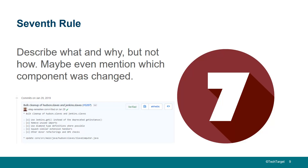Describe what and why, but not how. If somebody wants to know how, they can go look into the code. Describing what was changed, maybe why it was changed, and mentioning the component or at least the area in the code so that people have an idea of what part of the code was being impacted — that is a good idea as well.